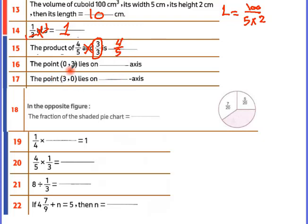The point (0, 3) lies on the y-axis because when the x-coordinate is zero, the point lies on the y-axis. When the y-coordinate is zero, the point lies on the x-axis.